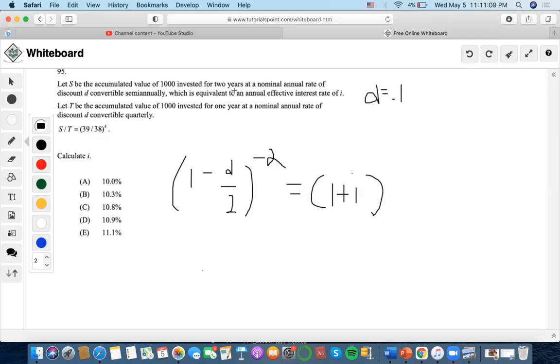First and foremost, we can first plug in 0.1 into d. So 0.1 divided by 2 is 0.05 minus one. This would be 0.95.